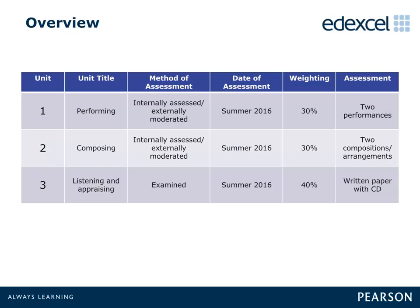The specification is divided into three units: performing, composing, and listening and appraising. The first two units are internally assessed and externally moderated. The third unit is examined in a written paper sat sometime in May or June and is externally marked. Performing and composing are each worth 30% of the overall marks, and the written paper is worth 40% of the marks for the award.